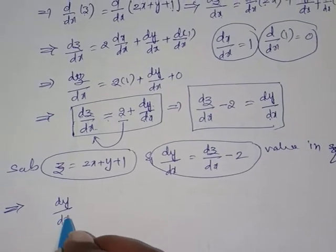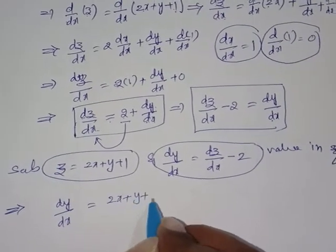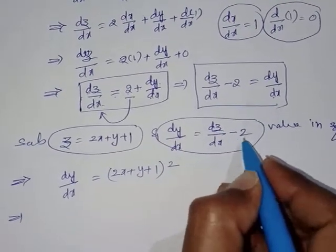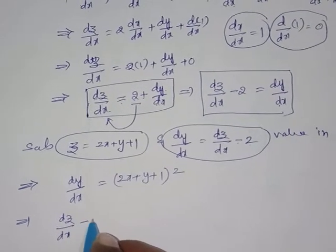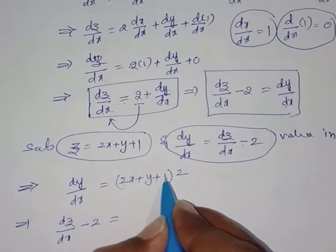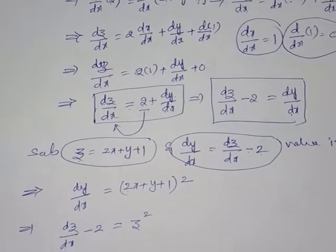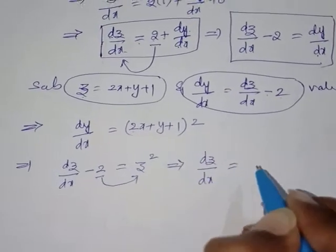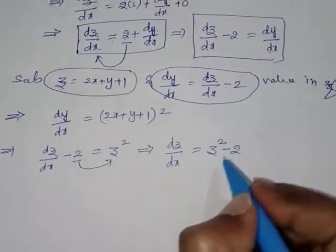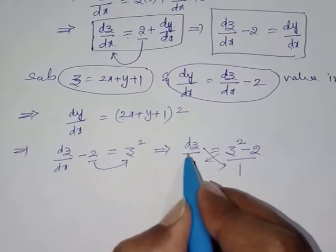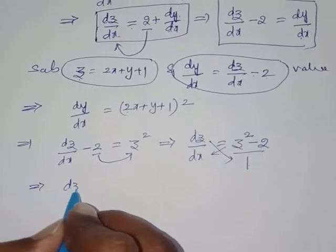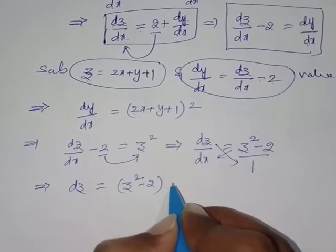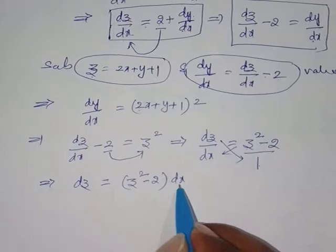Equation 1 is dy/dx = (2x + y + 1)². Substituting dy/dx = dz/dx − 2 and noting that (2x + y + 1) = z: dz/dx − 2 = z². Transferring −2 to the right-hand side: dz/dx = z² + 2. Cross-multiplying: dz = (z² + 2) dx.